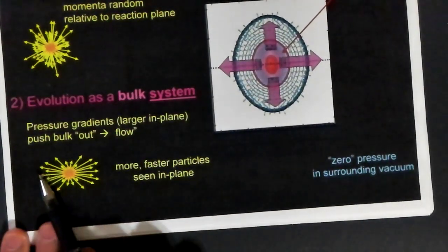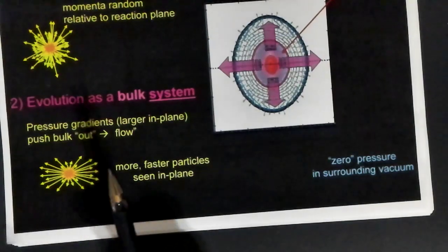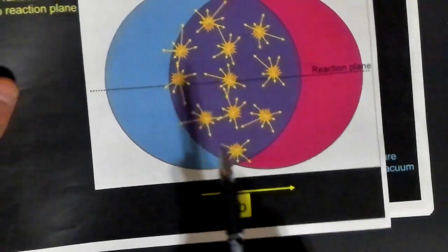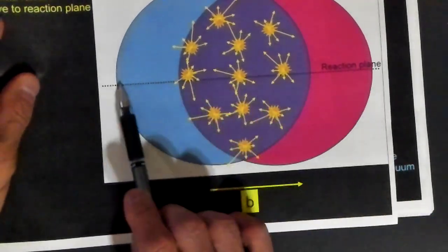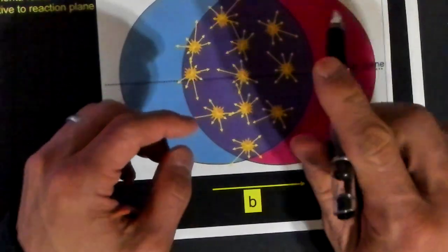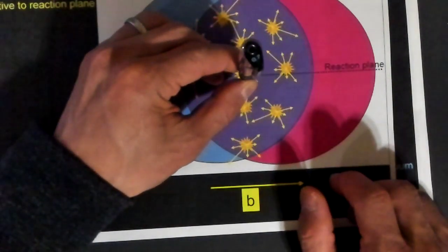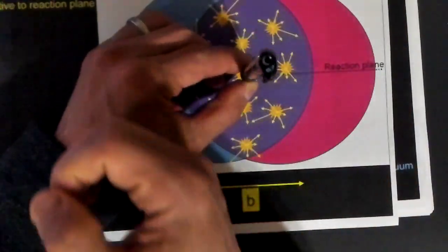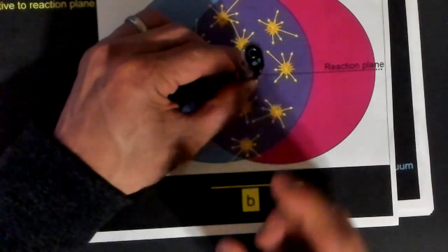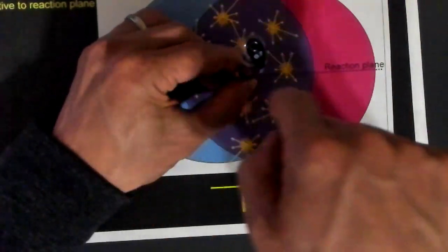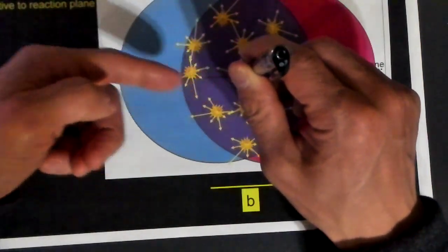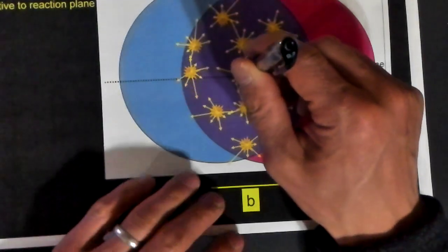Just to get your bearings, here is the reaction plane. Here's the beam axis that's perpendicular to the paper right now. One particle is going this way, the other one's coming up the other direction. The reaction plane is then just the plane that goes through the centers of the particles.